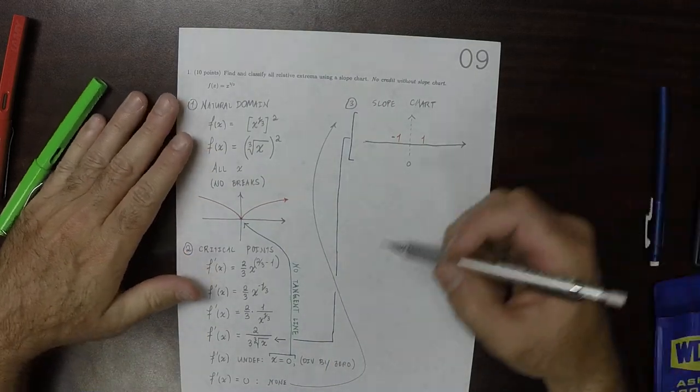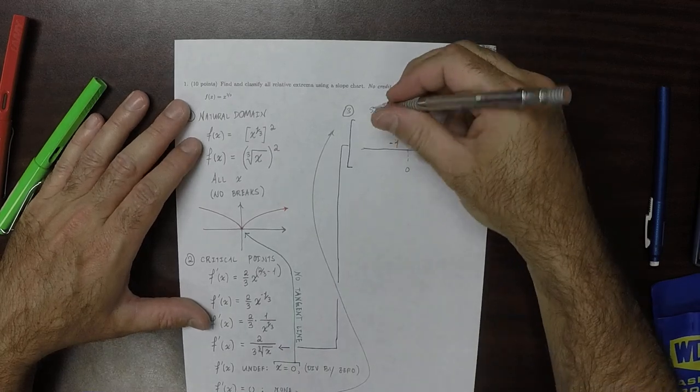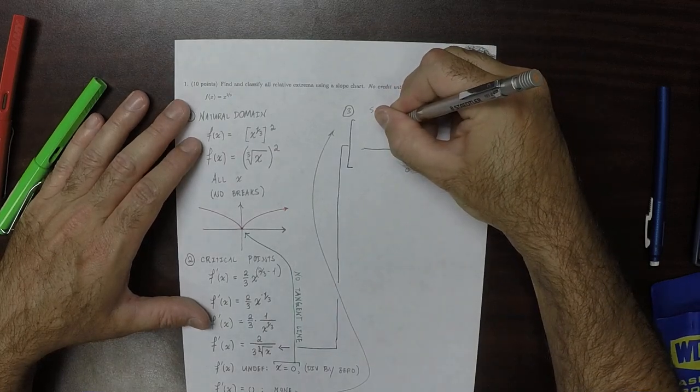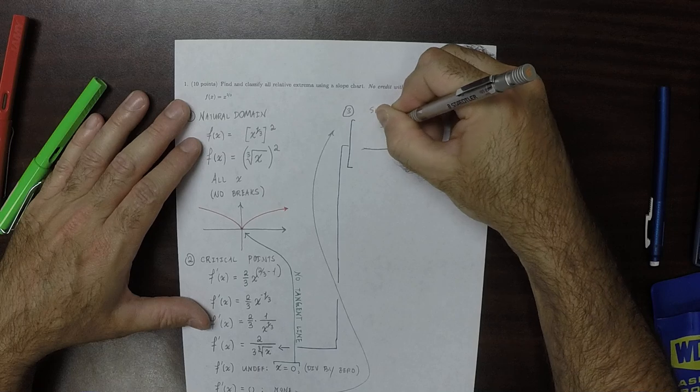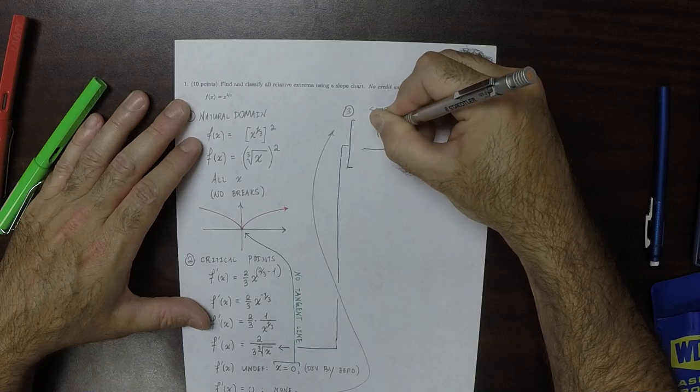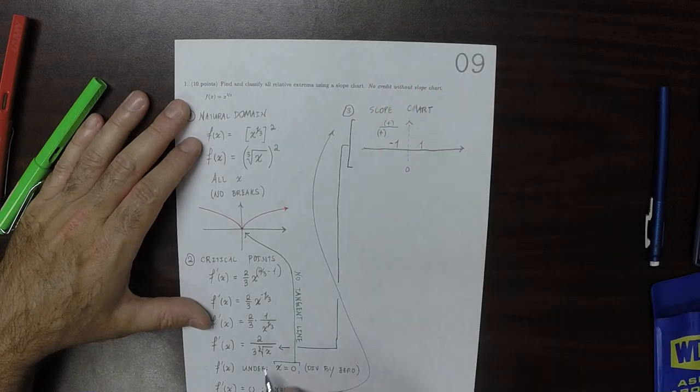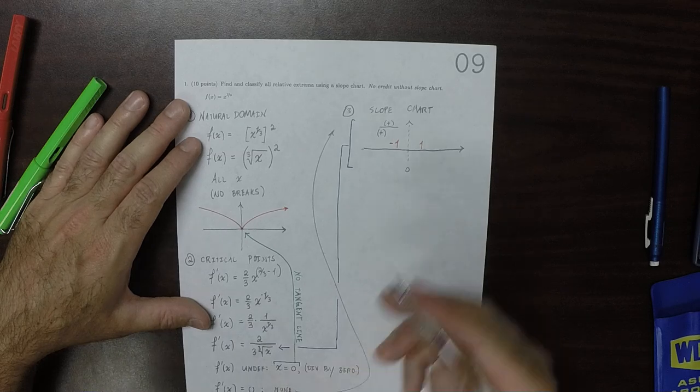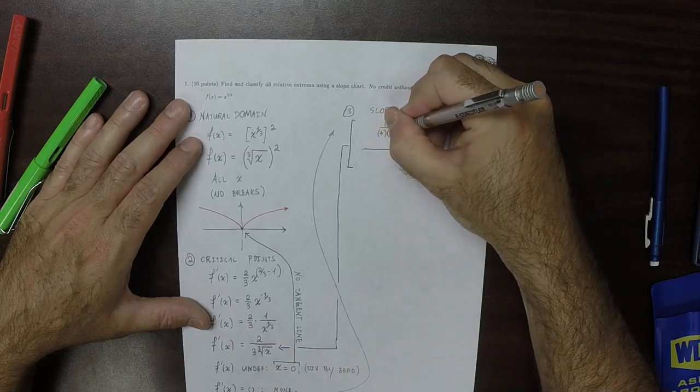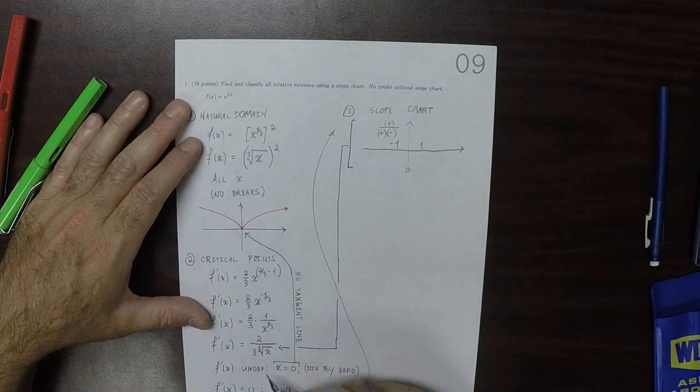Okay. So then, two, that's positive. So that'd be positive. Three, that's positive. And then the cube root of negative one is negative one, which is negative.